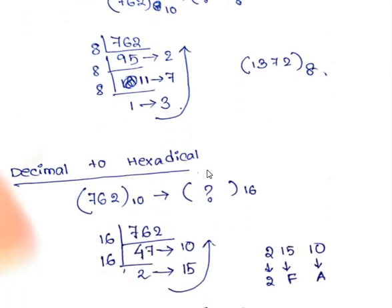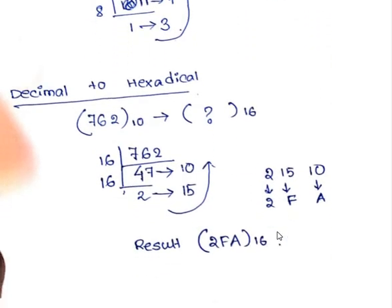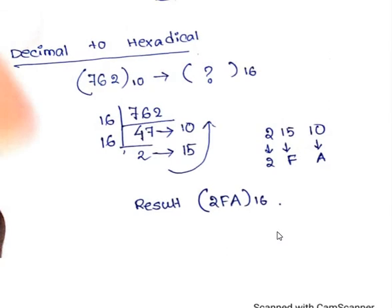When I want to convert a number from decimal to hexadecimal, the same thing applies — I have to divide the number, but here I apply 16 instead of 2 or 8, because the base of the hexadecimal number system is 16. Whatever remainder I get, I will store it, and that will be your hexadecimal number — here the result is 2FA.